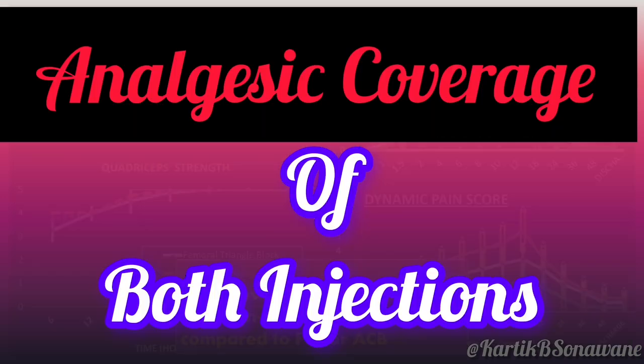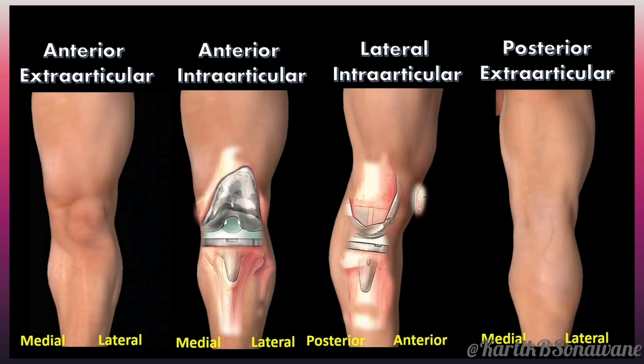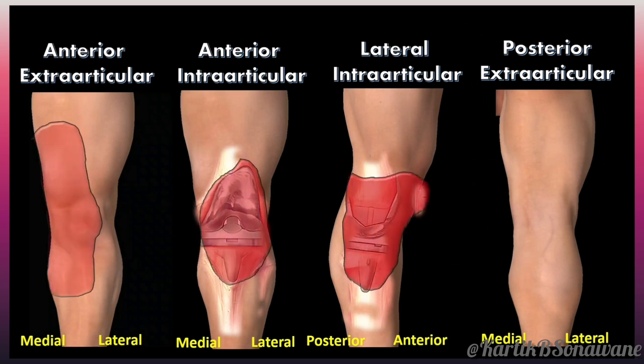Such spread pattern results in sensory blockade over the anteromedial aspect of the knee up to the tibial tuberosity, medial-retinacular complex, and intraarticular region, with the exception of the skin over the anterolateral aspect of the knee, which is supplied by the lateral half of the peripatellar plexus, and the posterior aspect of the knee, which is supplied by the posterior femoral cutaneous nerve of the thigh.